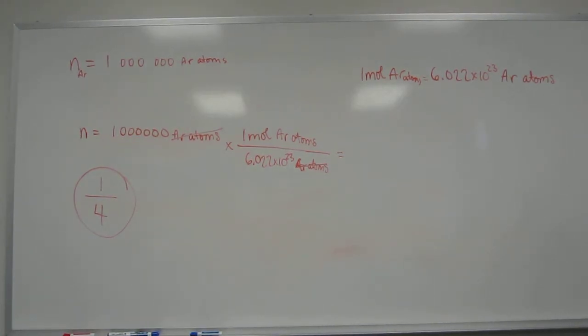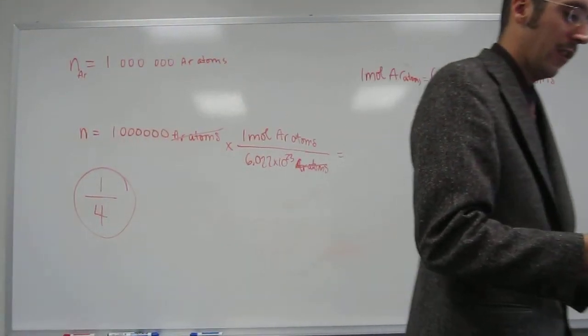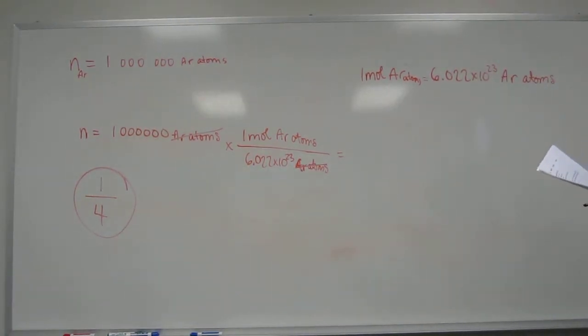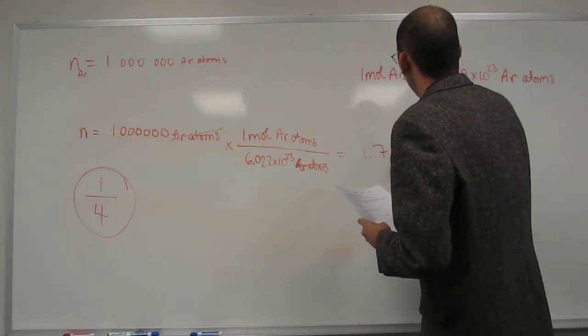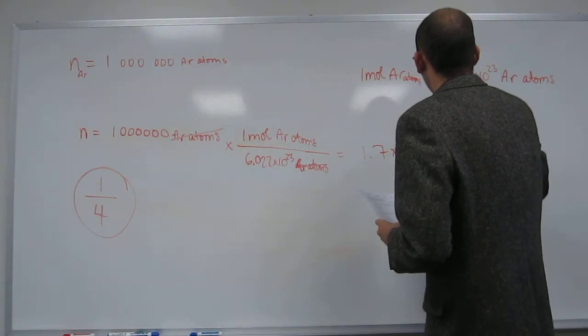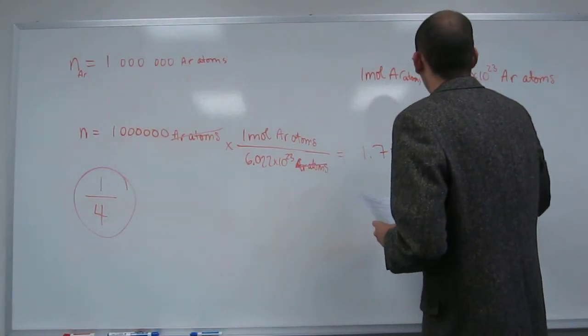So one million divided by... The answer is going to be in two sig figs. So our options are either one or two sig figs, and from the answers I would assume that it's going to be 1.7 times 10 to the negative 18th moles of argon.